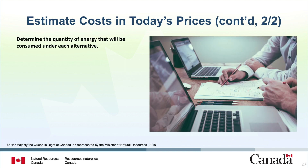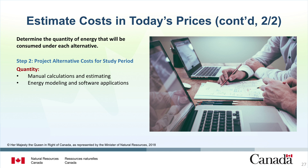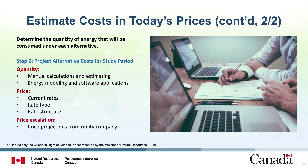The next step is to determine the quantity of energy that will be consumed under each alternative. One option is to manually estimate energy use based on your facility's historical data and extrapolate future energy use by the relative impact of the alternative's improvements. Another option is to use energy modeling software or advanced building automation systems to make these estimates. Then identify current prices related to each alternative's energy use pattern, including rate type and rate structure. Finally, calculate price escalation for future energy consumption, because prices for energy will change significantly over time. Obtain price projections from your utility company to accurately determine current and future energy costs.